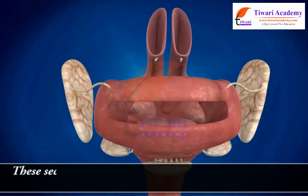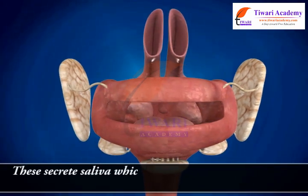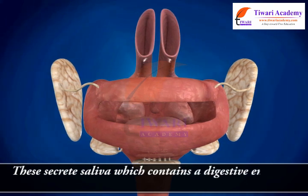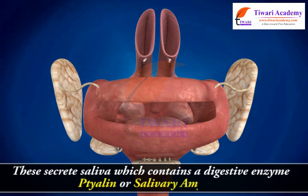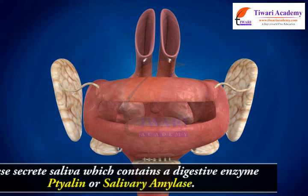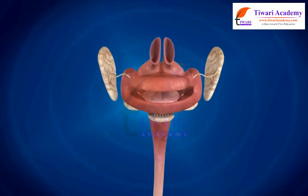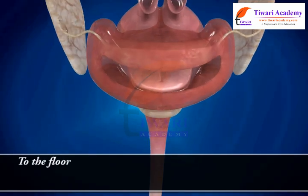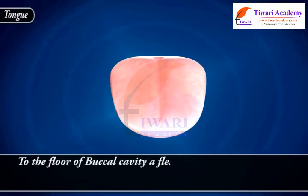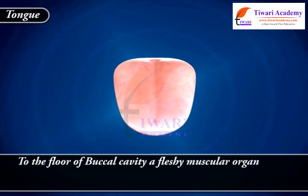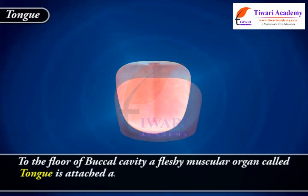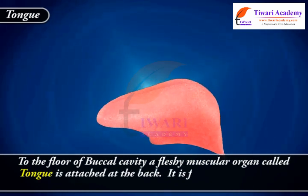These glands secrete saliva, which contains a digestive enzyme called ptyalin, or salivary amylase. The salivary ducts open into the buccal cavity. On the floor of the buccal cavity, a fleshy muscular organ called the tongue is attached at the back.